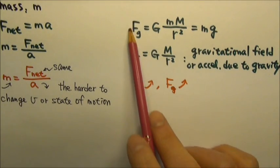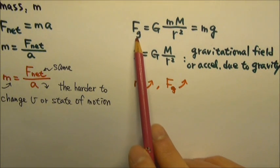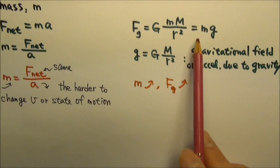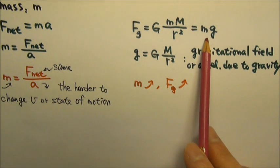We have also learned about Newton's law of gravitation. The gravitational force equals big G times mM over r squared, which also equals mg, the weight of the object.